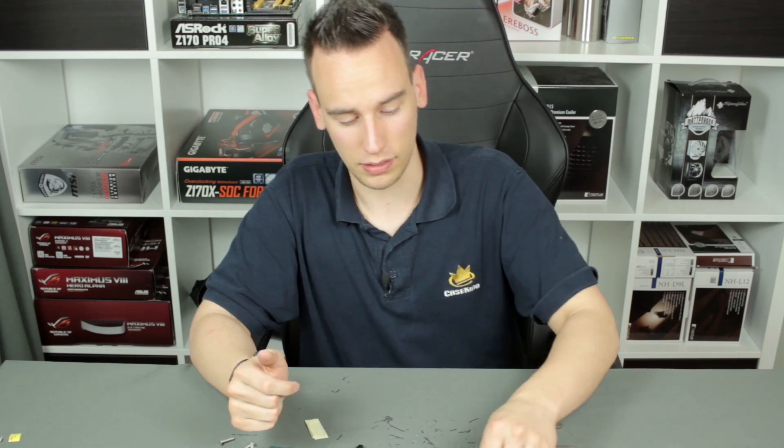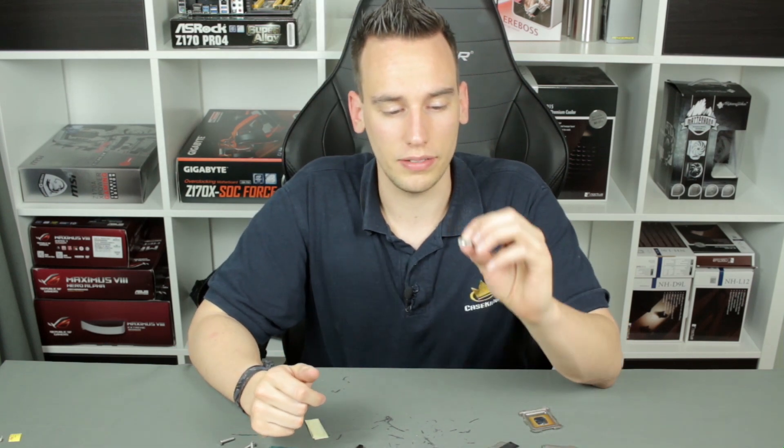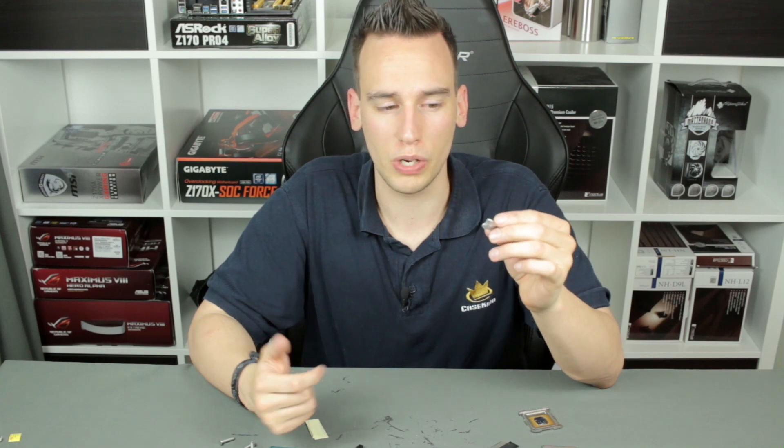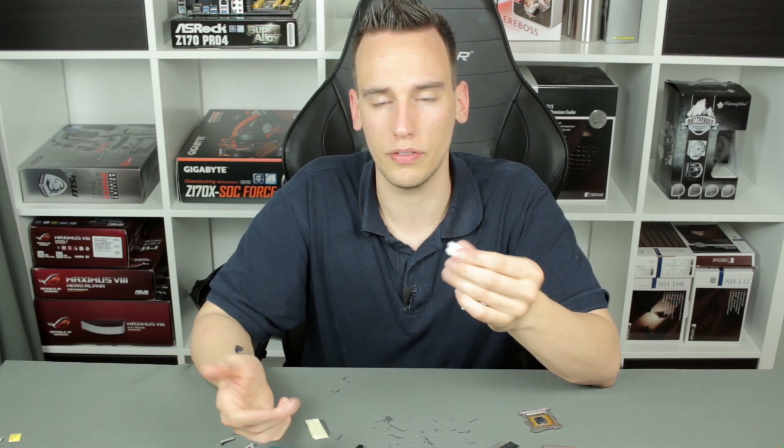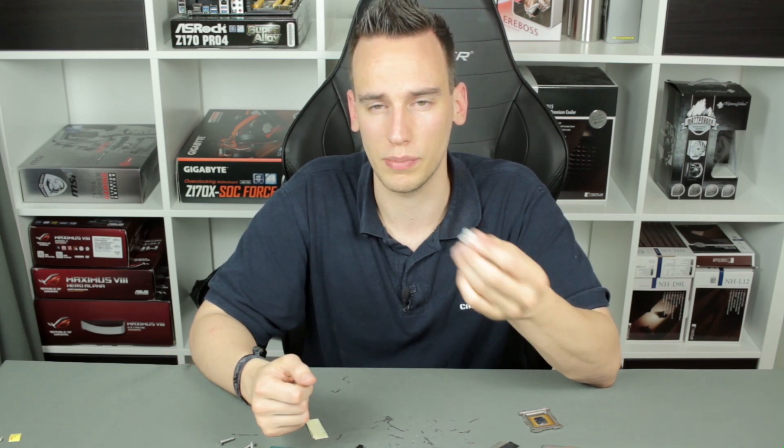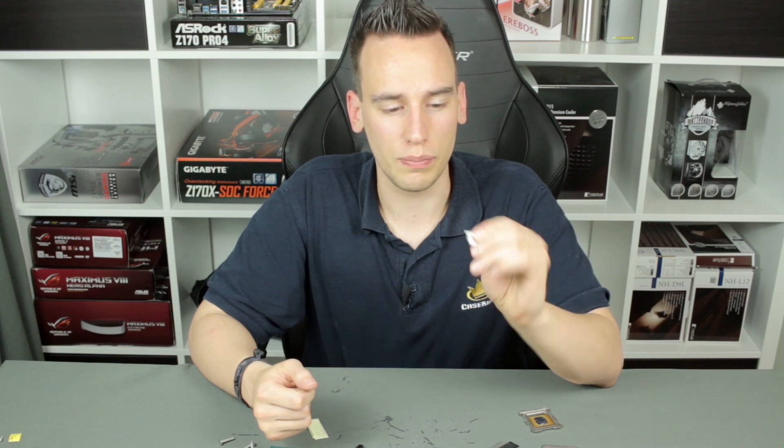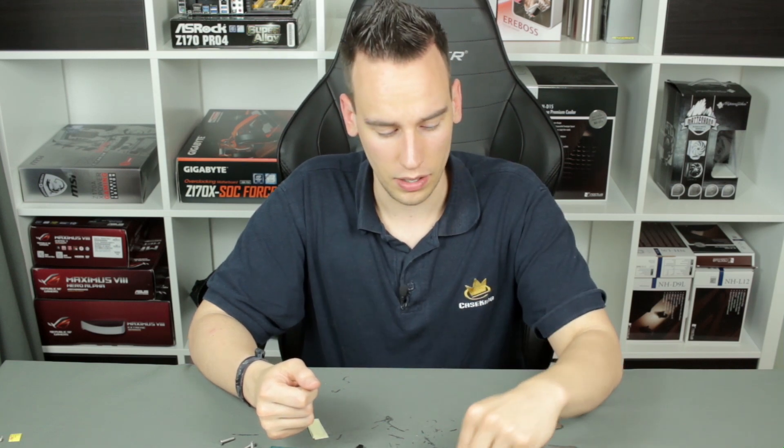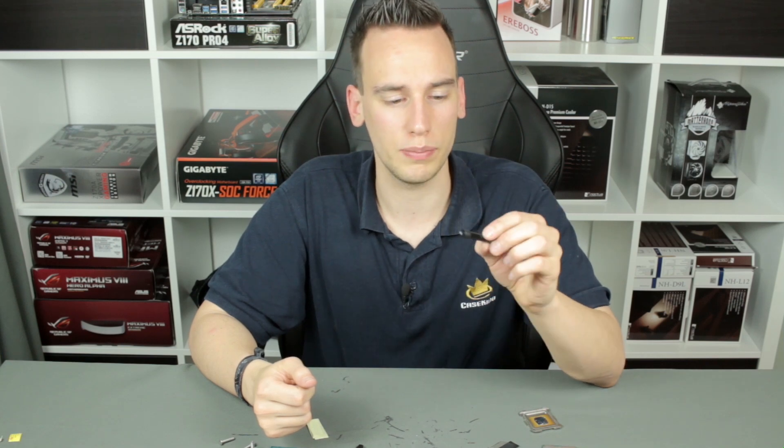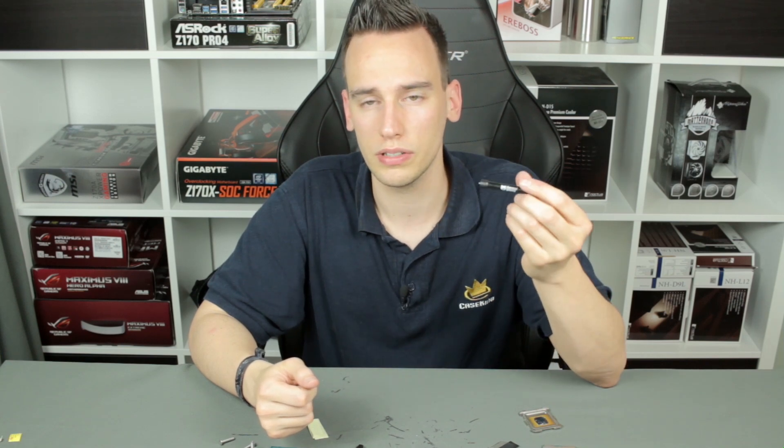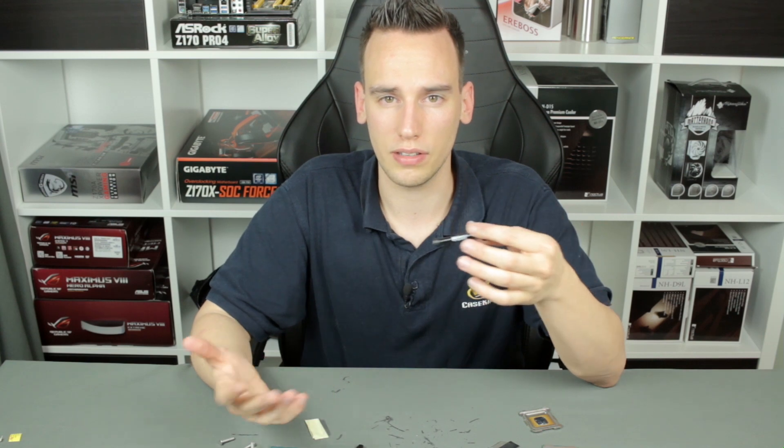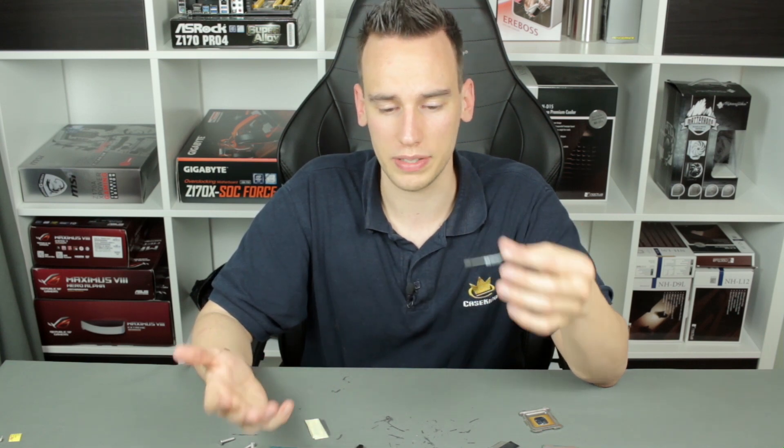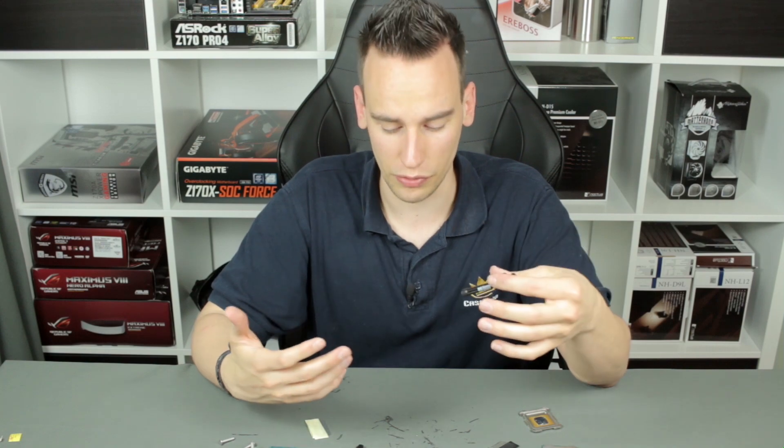So why would you replace indium with liquid metal? The reason is that the indium is quite thick. It has quite good thermal conductivity of around 83 (copper has about 400). The problem is that it's around one millimeter thick. So if you remove this sheet of indium, you can replace it with liquid metal, for example Thermal Grizzly Conductonaut, and the resulting thickness should be around 0.1 millimeter. Obviously, it's a lot better in performance.